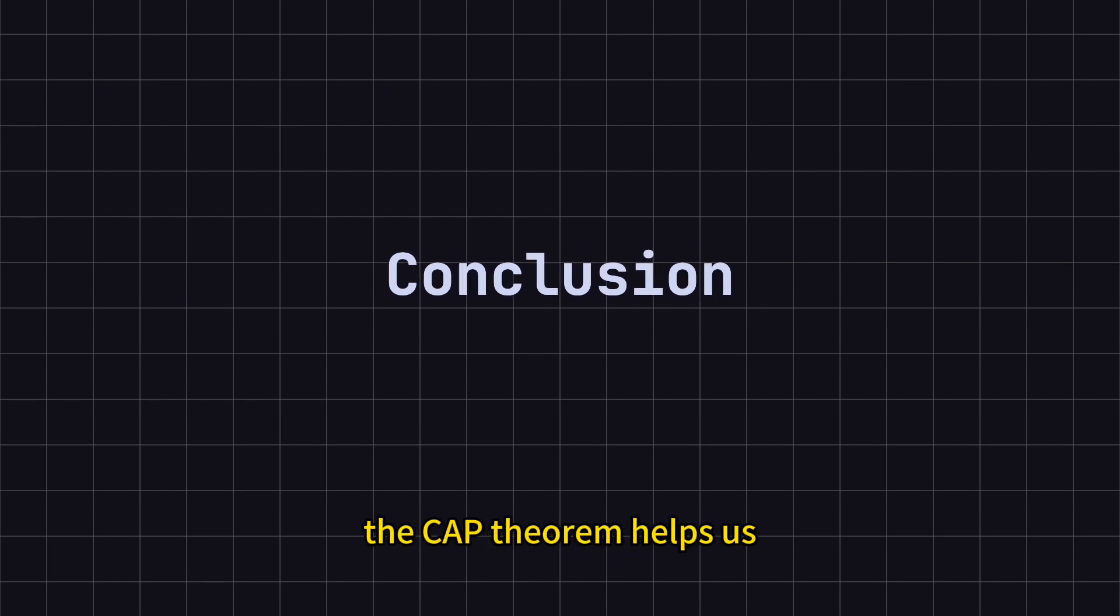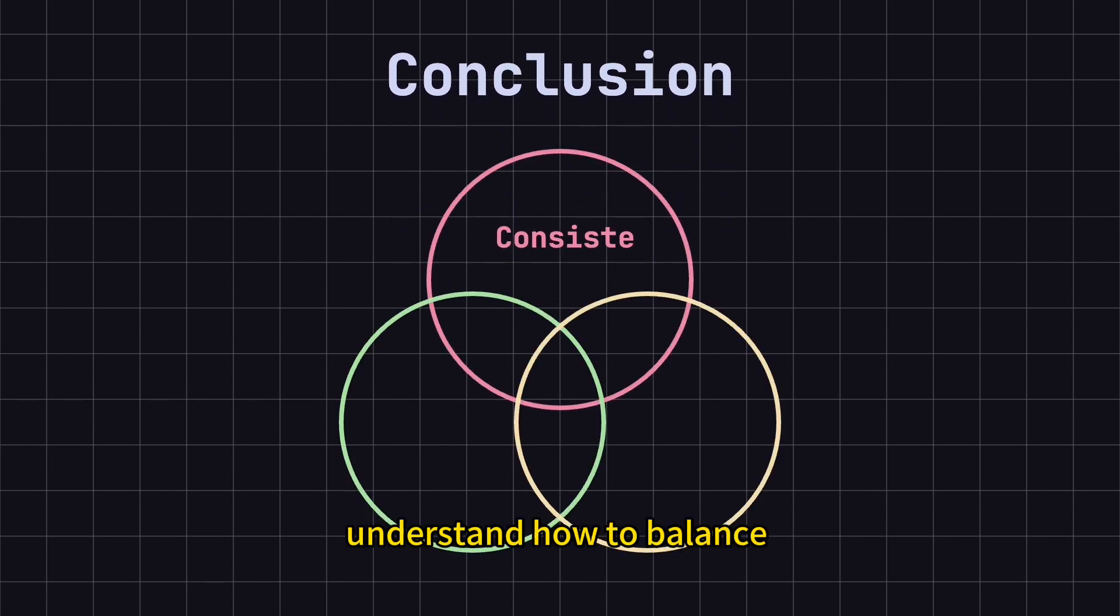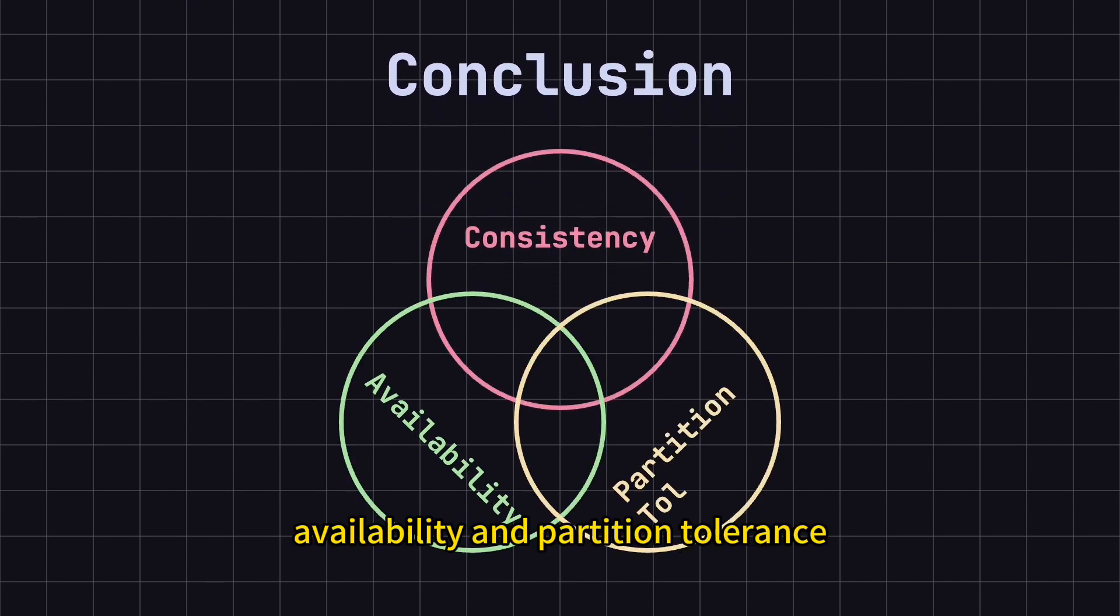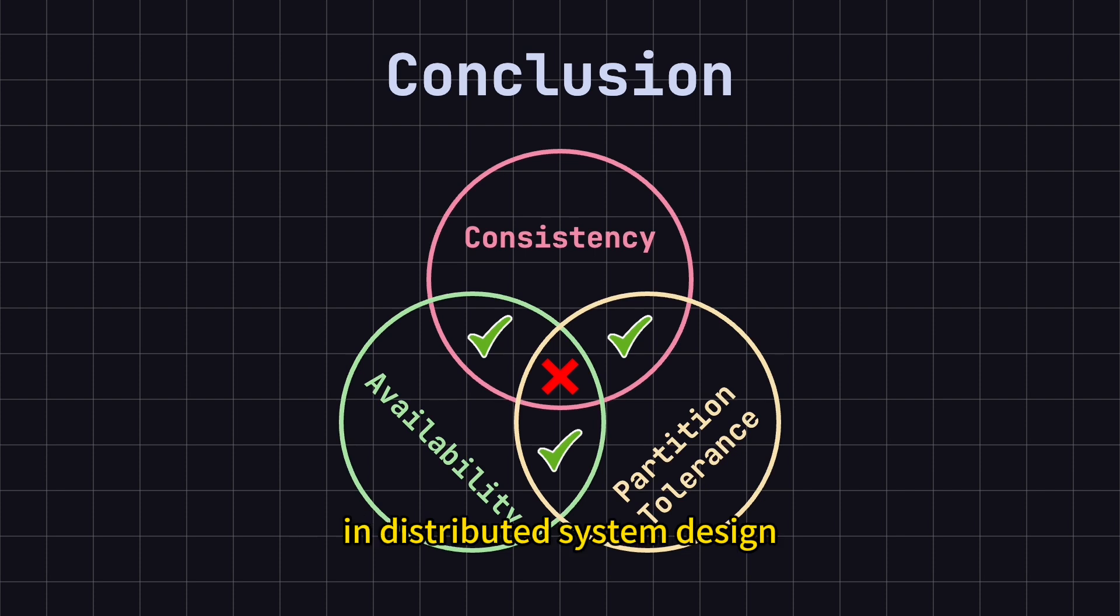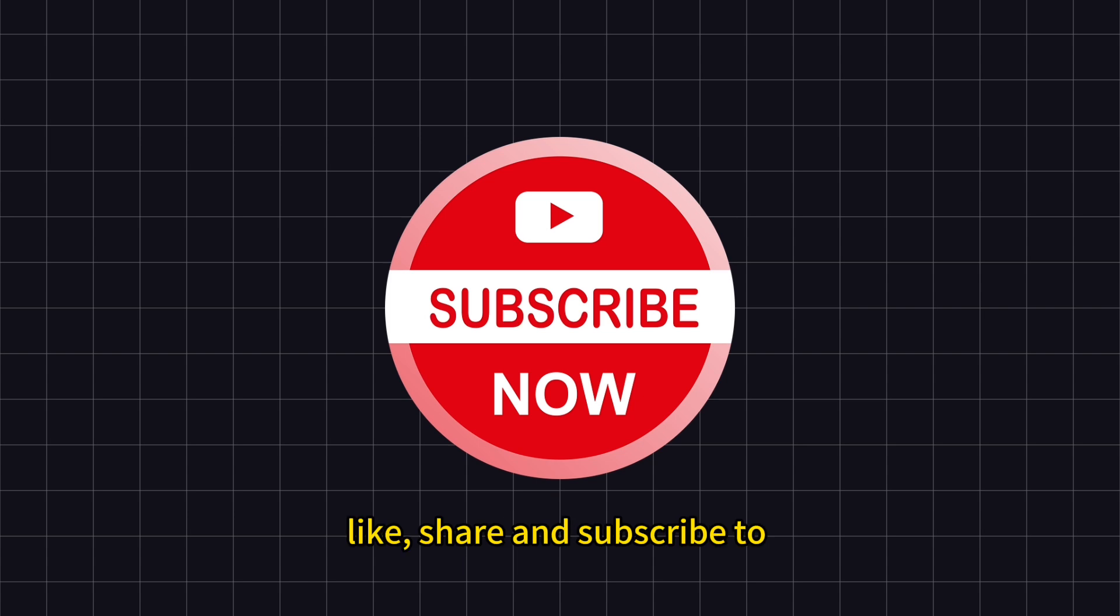In conclusion, the CAP theorem helps us understand how to balance consistency, availability and partition tolerance in distributed system design. Understanding these trade-offs is crucial for designing reliable and efficient distributed systems. By selecting the right systems and configurations, we can better meet the specific needs of different applications. If you found this video helpful, don't forget to like, share and subscribe to the ByteVigor channel. I'll keep bringing you more great content on system design. See you in the next lesson!